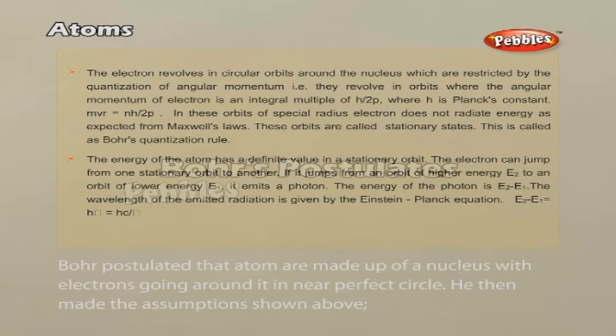Bohr's postulates: Bohr postulated that atoms are made up of a nucleus with electrons going around it in near-perfect circles. He then made the assumptions shown above.